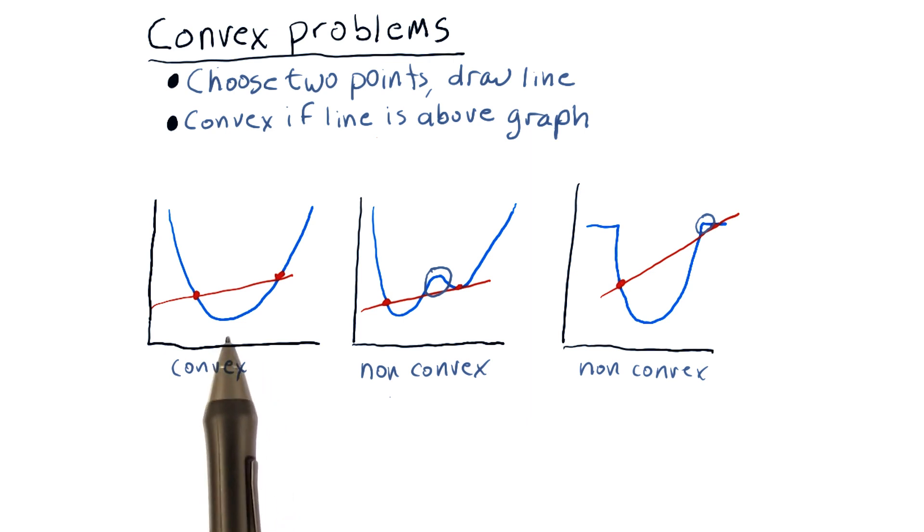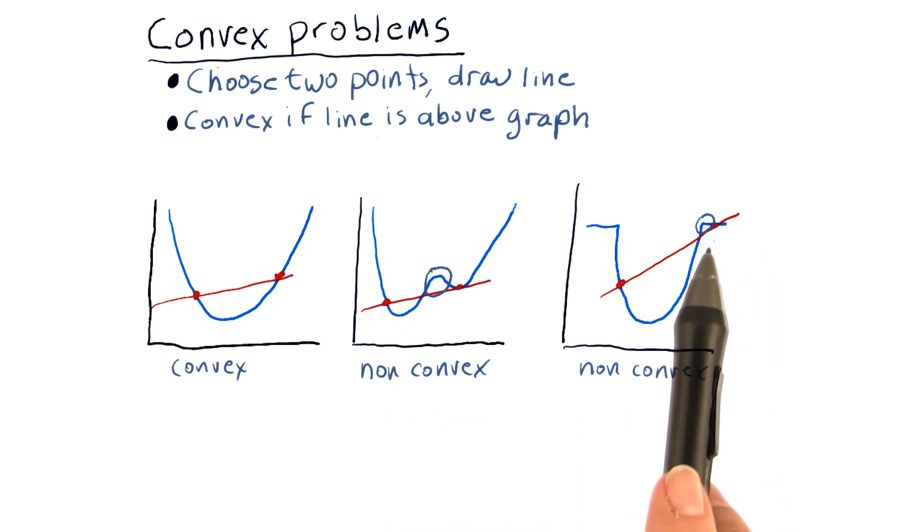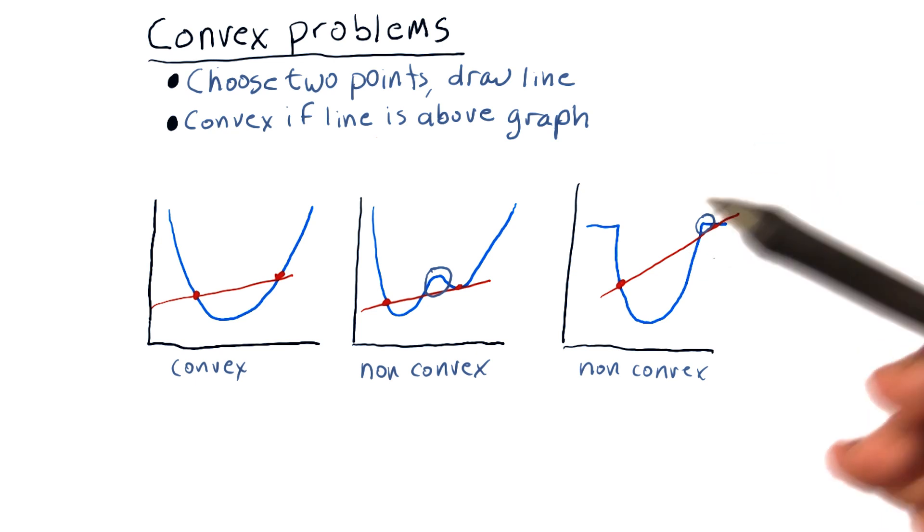And in other words, that local minima is the global minima. This one fails for that reason. We also can't have any flat regions that essentially don't have any slope downward.